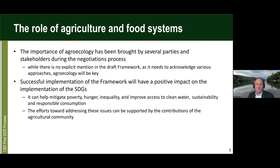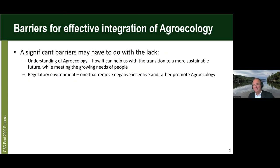Let's talk about the barriers, particularly as they relate to agroecology. The number one barrier is an understanding of what it means. There is a growing cadre of people who understand that, but we can see in our negotiations that it is not wide and deep enough, and we're going to need to do some work. Second is the regulatory environment — ensuring that we not only remove the negative incentives, but also that we enable and promote agroecology.